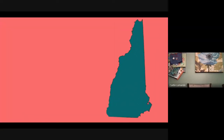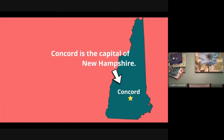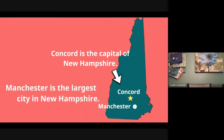Now we are going to locate two places on the map of New Hampshire. The first is the city of Concord — Concord is the capital of New Hampshire. Then just south of Concord and a little to the east is the city of Manchester, which is the largest city in New Hampshire.